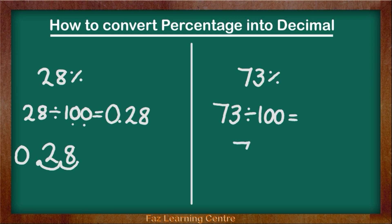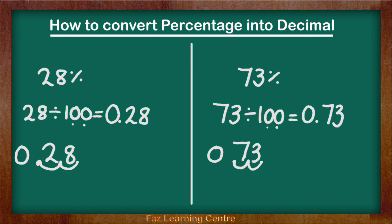Now I am going to write the whole number 73. The first question you are going to ask yourself is how many zeros do you have? We have two zeros in 100. We are going to bring our decimal visible — that normally comes at the end of every whole digit. Now we are going to move the decimal 2 times to the left because we have two zeros: 1, 2. Pop a zero in. Now our answer is 0.73. 73 divided by 100 equals 0.73 — we have converted percentages into decimals.